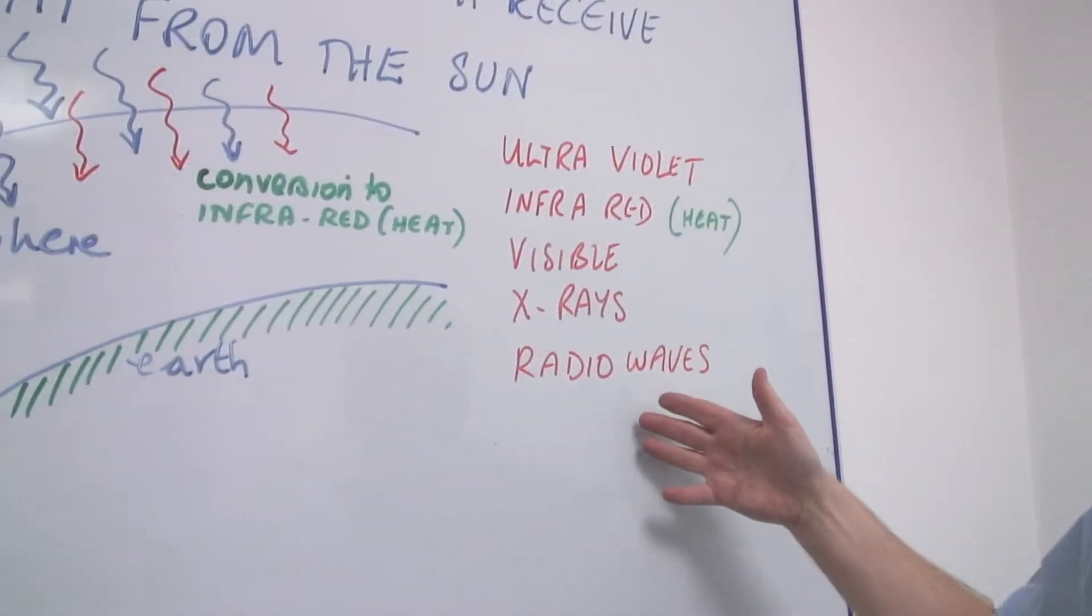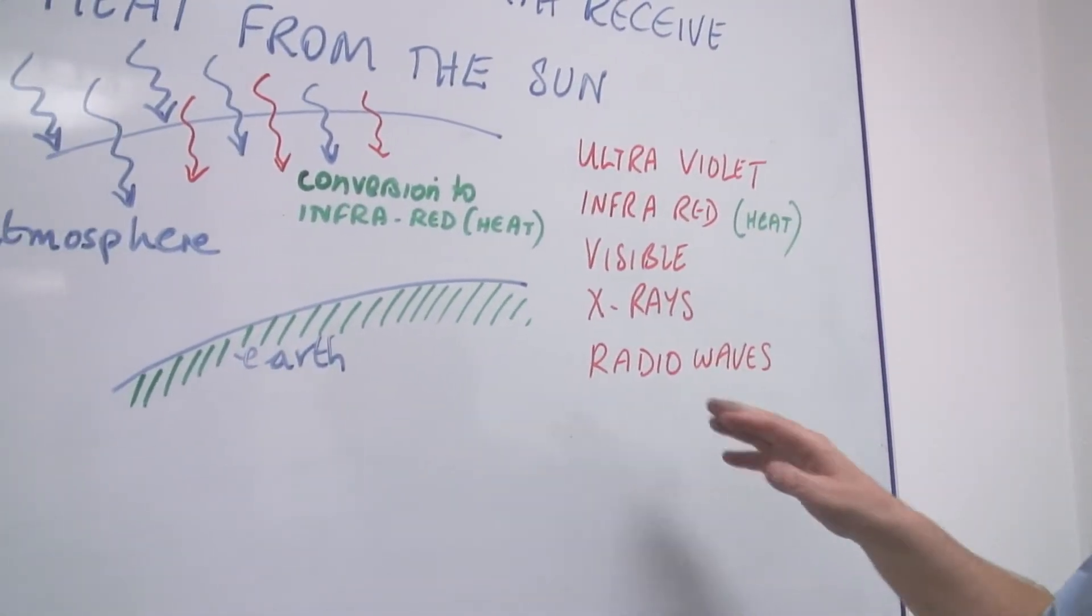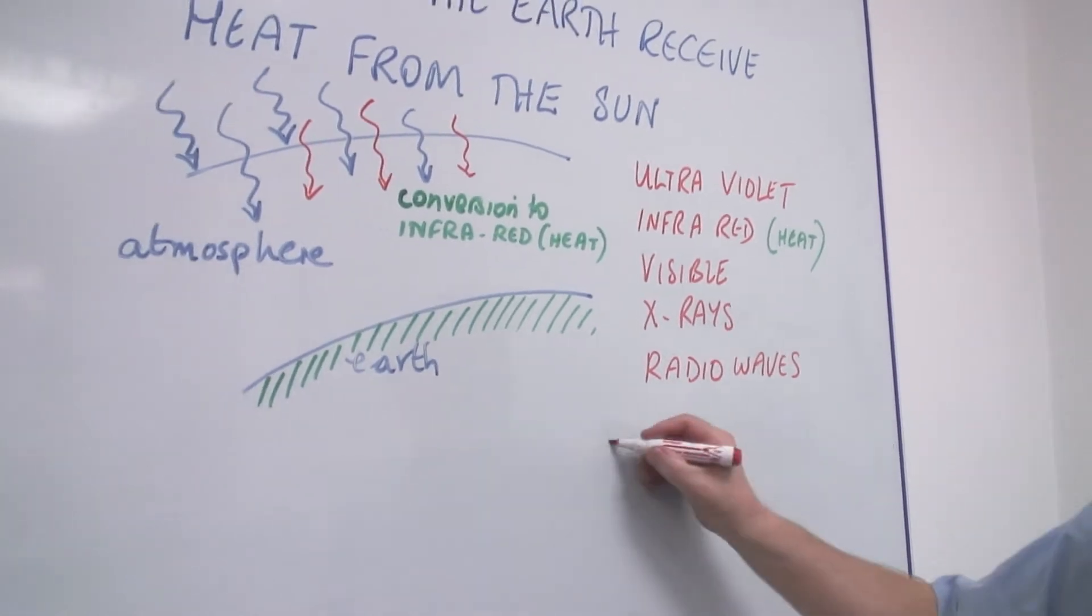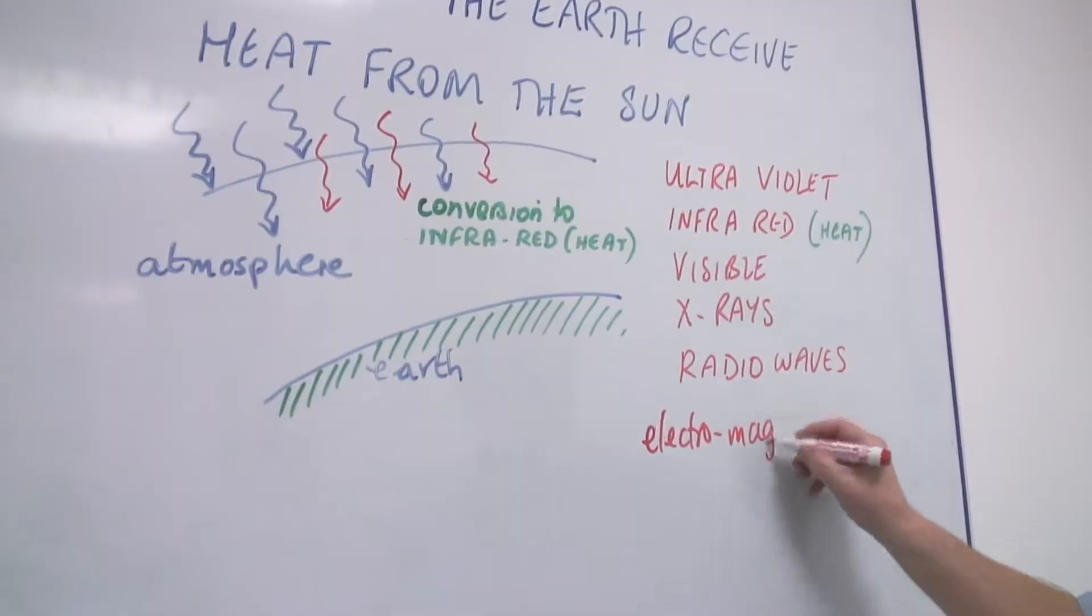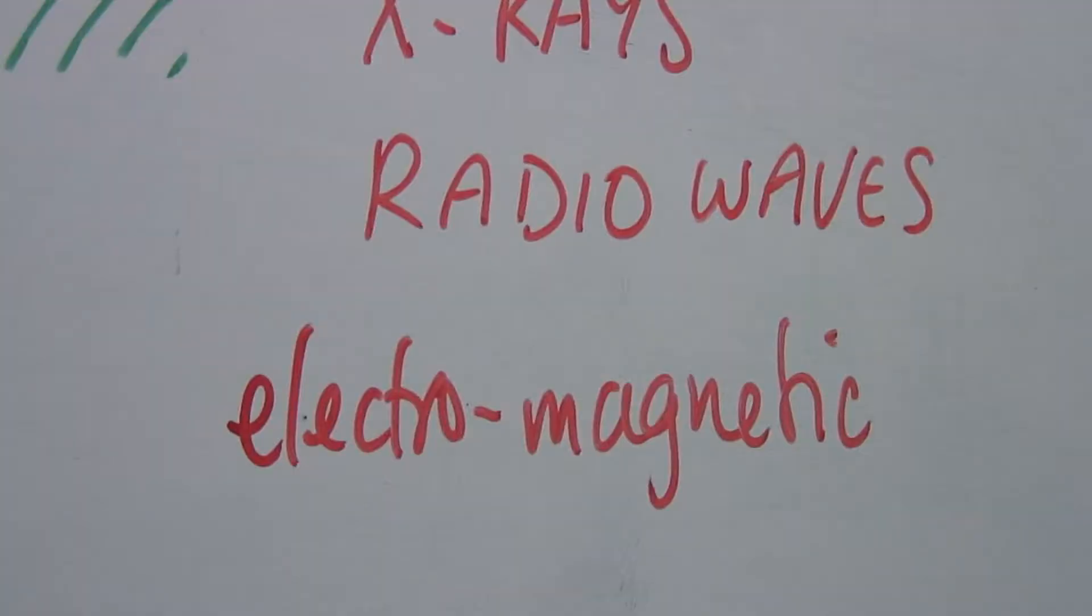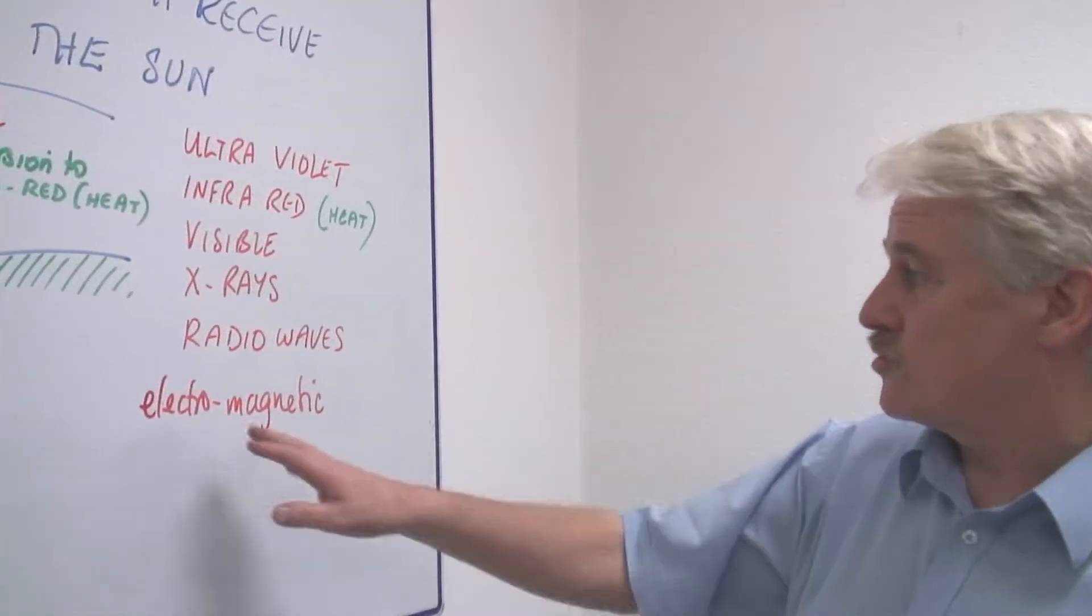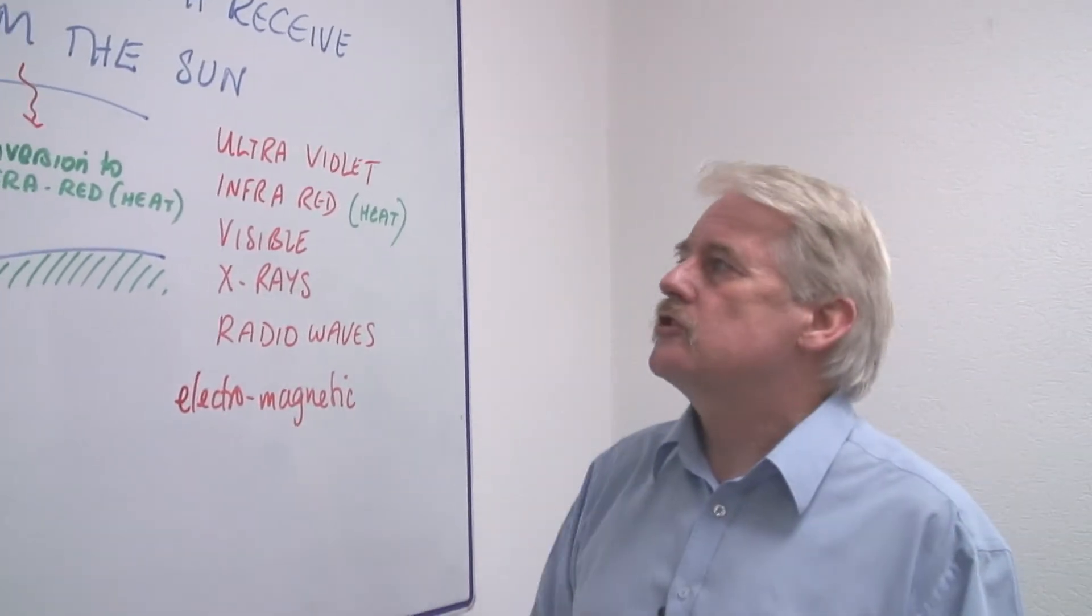Of course all of these are electromagnetic radiations. We say they are electromagnetic radiations. And light, visible radiation, light is just one of these electromagnetic radiations.